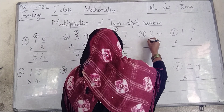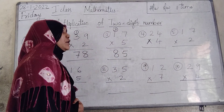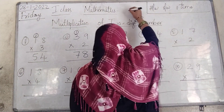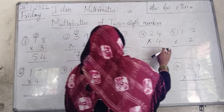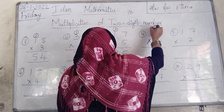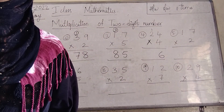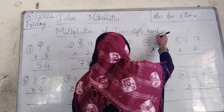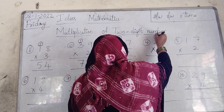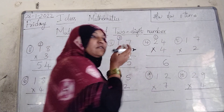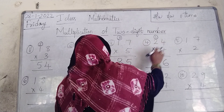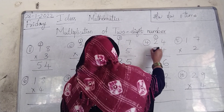Next: 24 into 4. 4 fours are 16. Which number do we write in the 1st place? 6. We write 6 here and carry 1 to the 10th place, above the 2. 4 twos are 8, plus 1 equals 9. So 24 into 4 equals 96. What is the product? 96.